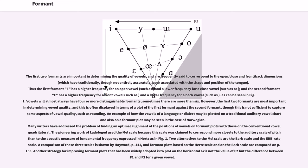Vowels will almost always have four or more distinguishable formants, sometimes there are more than six. However, the first two formants are most important in determining vowel quality, and this is often displayed in terms of a plot of the first formant against the second formant, though this is not sufficient to capture some aspects of vowel quality, such as rounding.